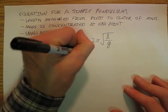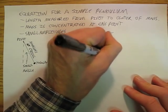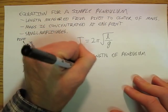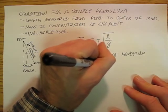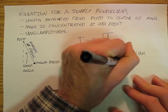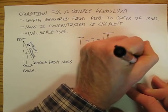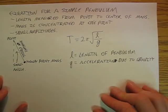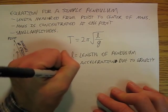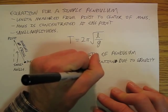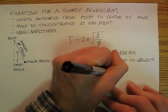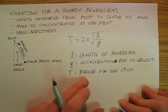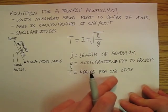And so L is length of pendulum. G is our good old friend, the acceleration due to gravity. And then we know what 2 pi is, and then T is the period for one cycle. And that's redundant, because period means time for one cycle. So I shouldn't really put it in there, I'm just putting it in there as a reminder to you.